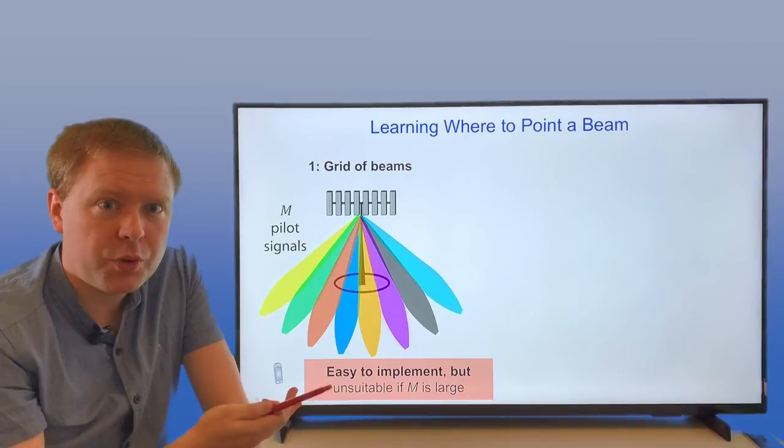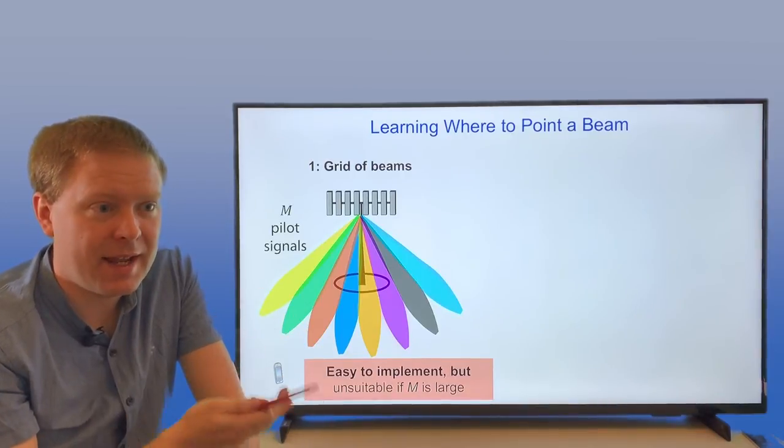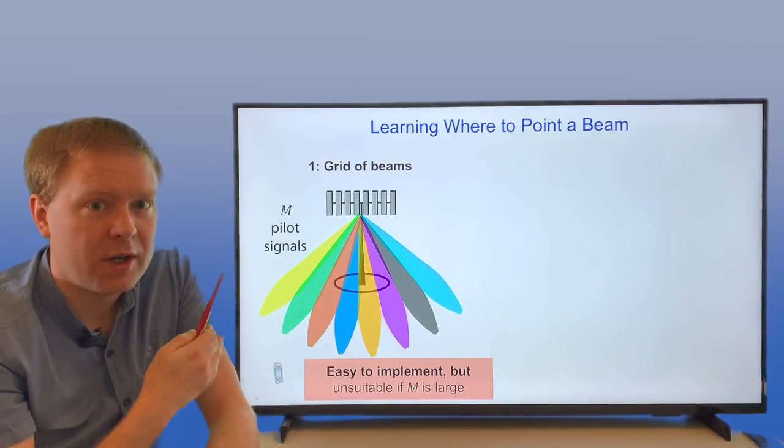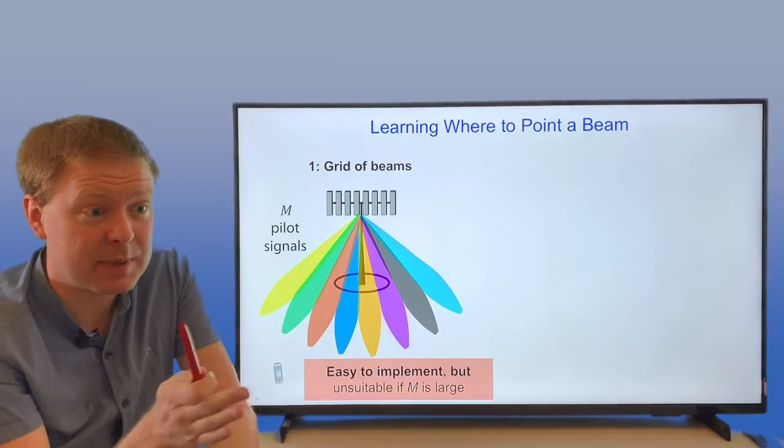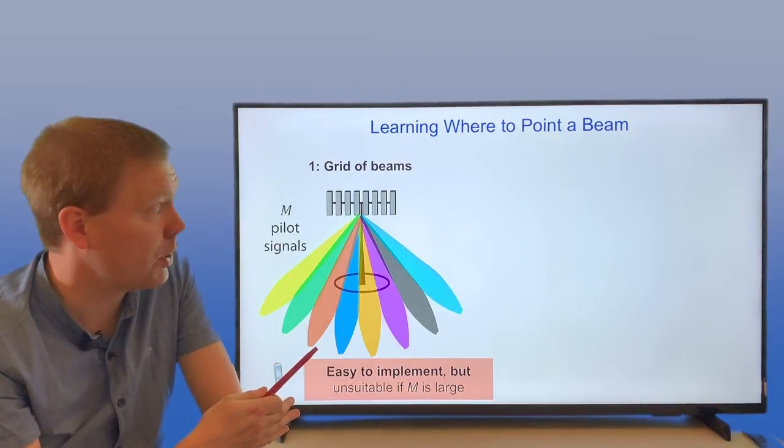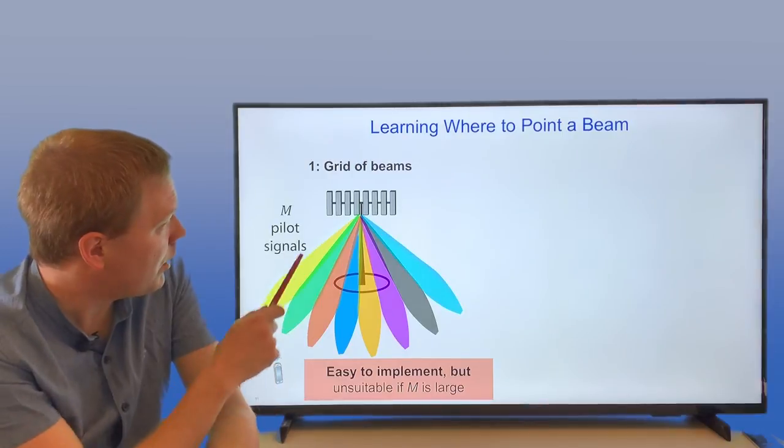What's important when you have many antennas is that you're having the flexibility of sending beams in different directions, and you need to learn how to form those beams in a good way. One option, if you have M antennas in this array here, multiple ones in each of these columns,